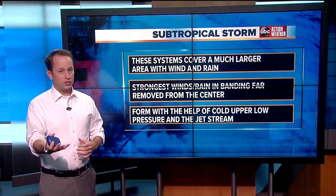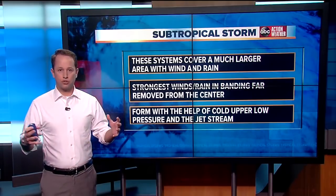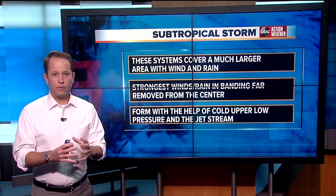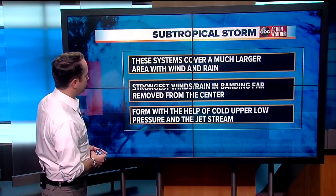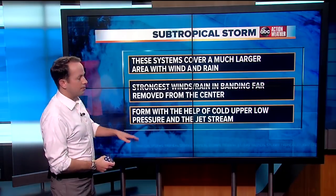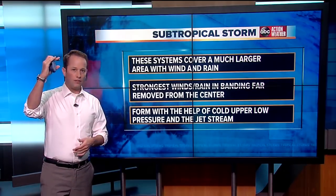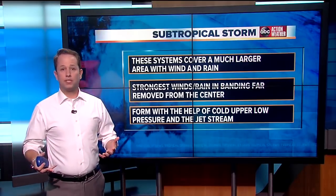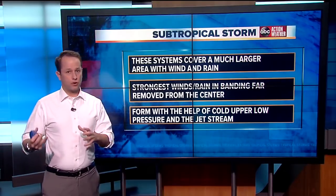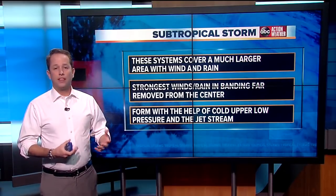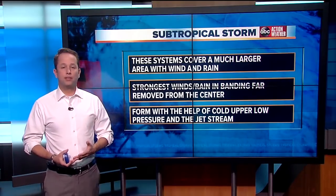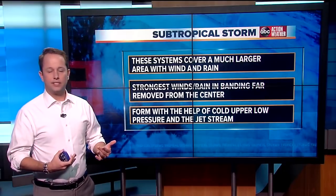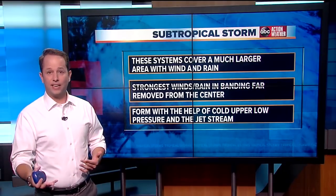And as you know, with our tropical storms and hurricanes, the strongest winds and rain are right around that center of low pressure. These also form with the help of colder air aloft and some help from the jet stream, whereas tropical systems tend to develop off of tropical waves, thunderstorm complexes in the Gulf of Mexico — maybe they came in off of the continental United States and went into the Atlantic as well.